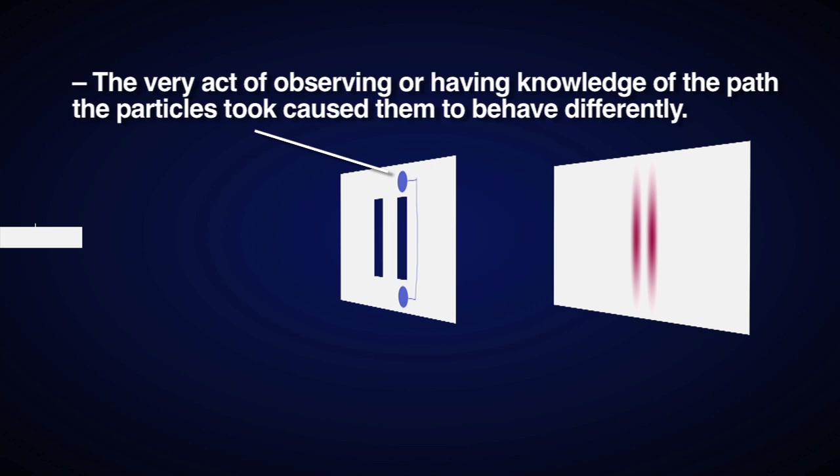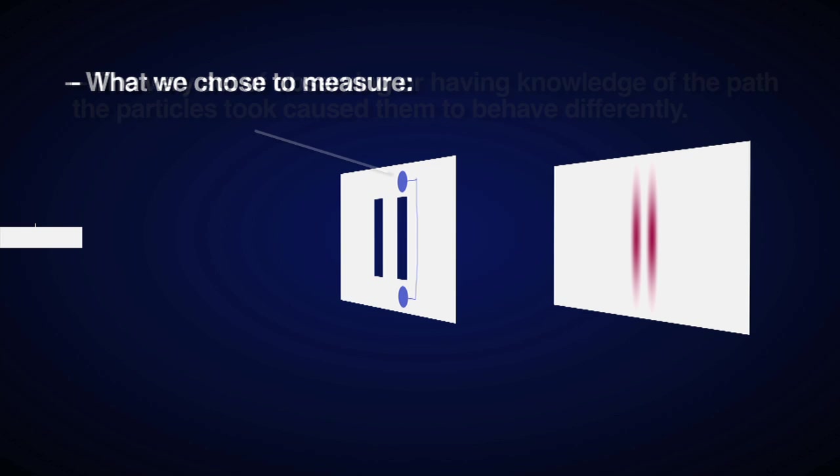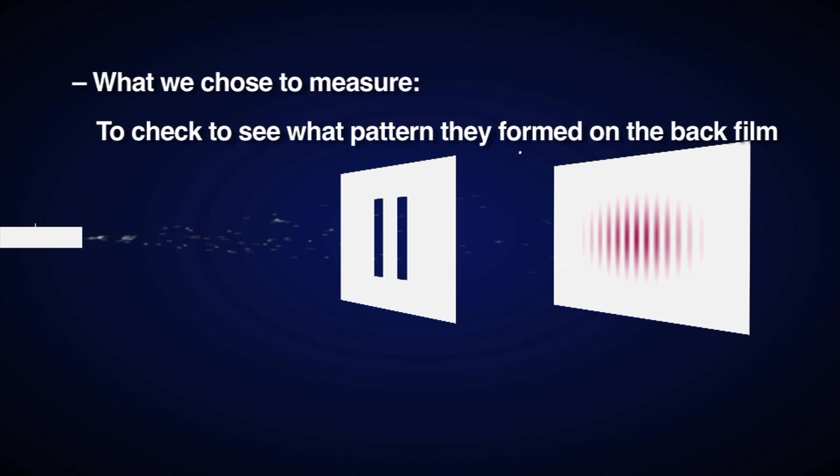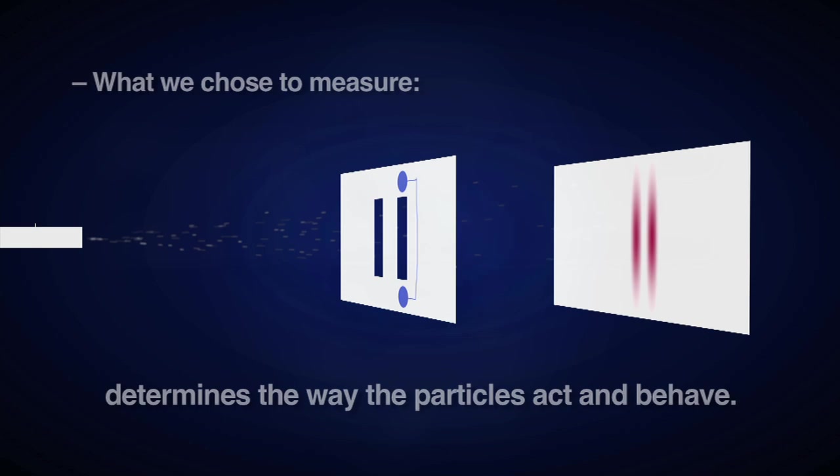What we chose to measure, whether to check to find out which slit they went through, or check to see which pattern they formed on the back film, determines the way the particles act and behave. Thus physicists inferred nothing was physically certain until an observer made a measurement. This was the same conclusion we saw with the formulation of the Schrodinger equation.